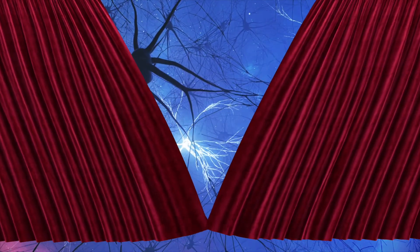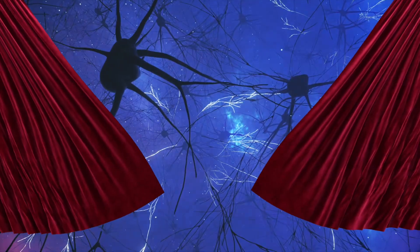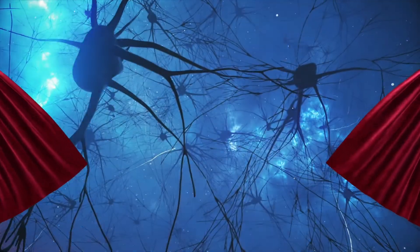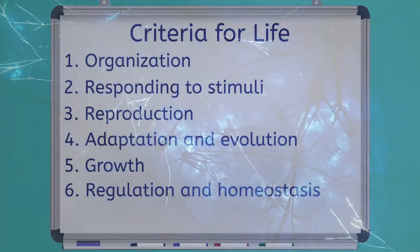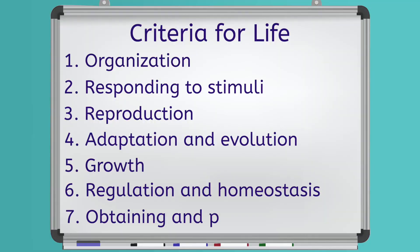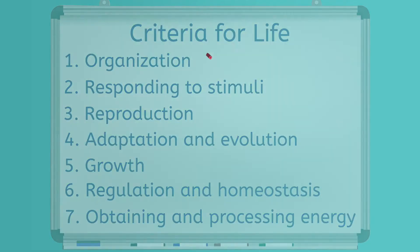In order to do all this cool stuff like grow, reproduce, and keep on being your same old awesome self, can you guess what you need? If you said energy, you would be right. The final characteristic of a living thing is the processing of energy, and the reactions in our body that process energy are called metabolism.